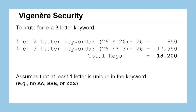To brute force a three-letter keyword, assuming we previously tried all two-letter keywords, we would have 26 times 26 minus 26 — that's 26 choices for each letter minus the 26 keywords like AA, BB, CC, which are effectively just Caesar ciphers. That gives us 650 two-letter keywords. For three-letter keywords, 26 cubed minus 26 gives us 17,550. So in total we would have tried 18,200 keys just for keywords up to three letters long.